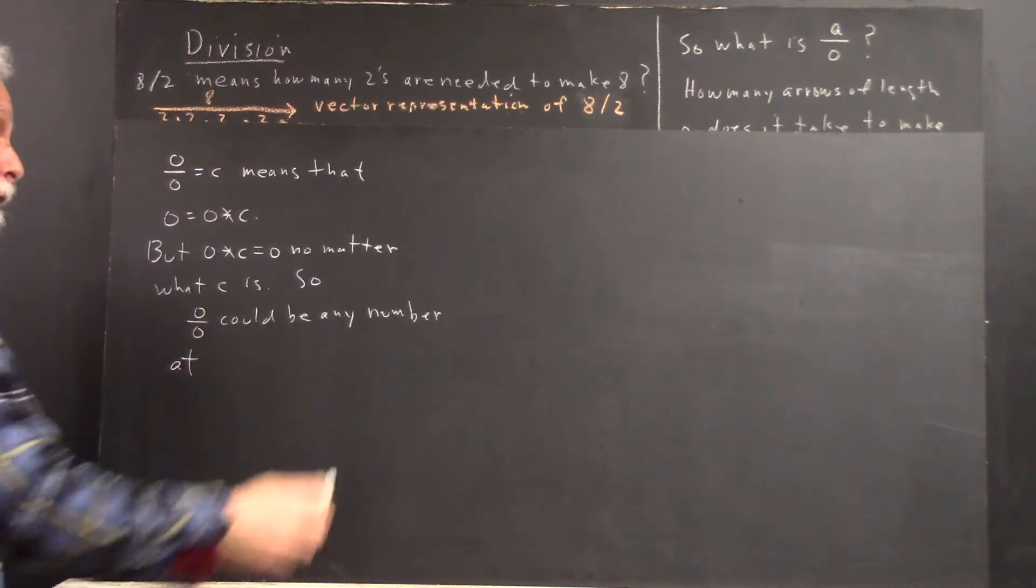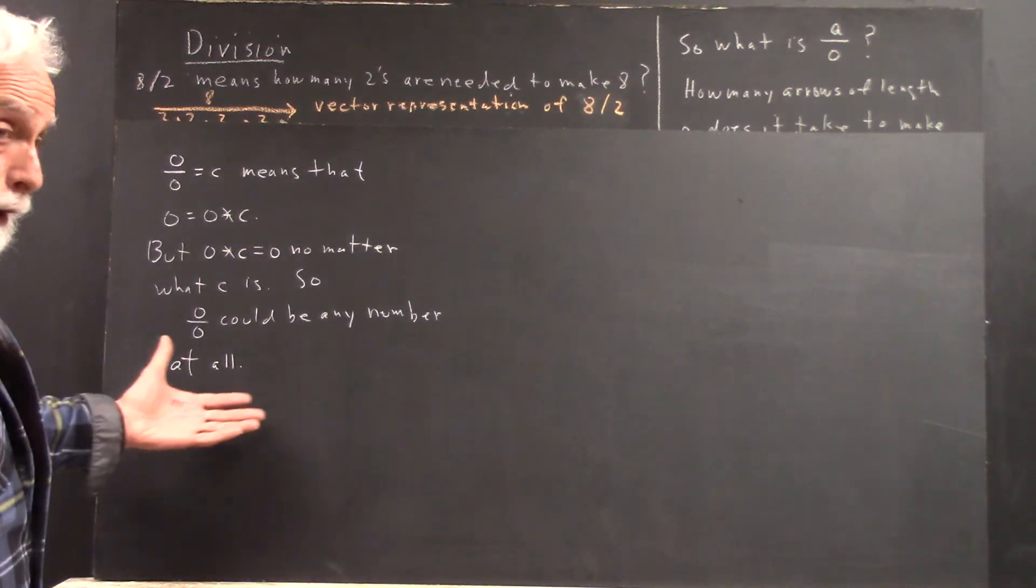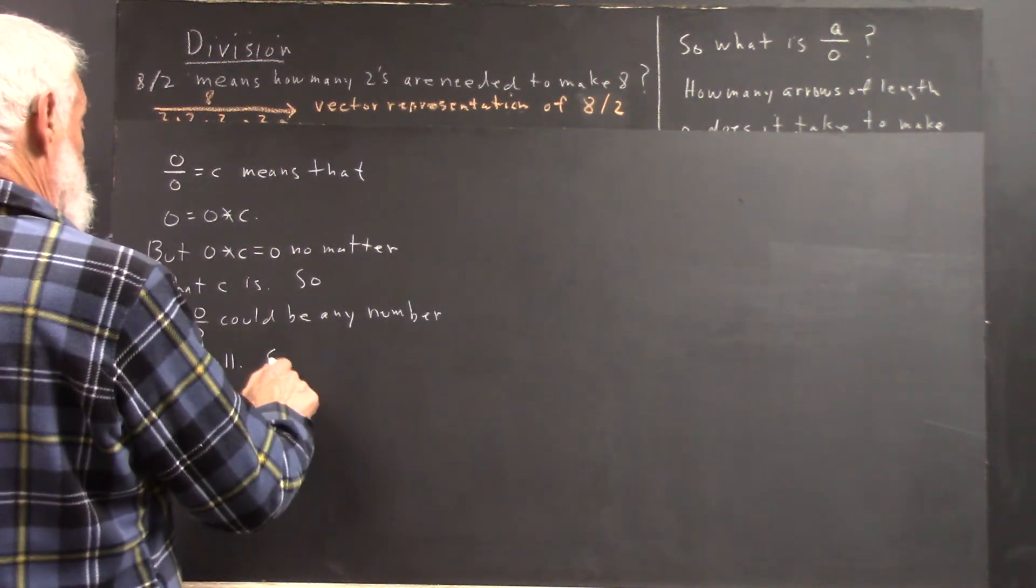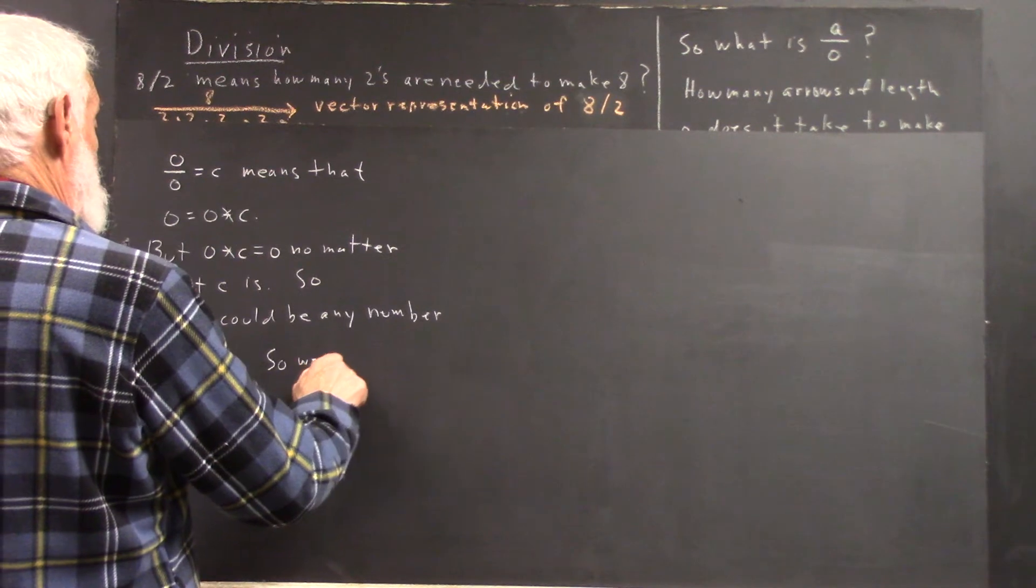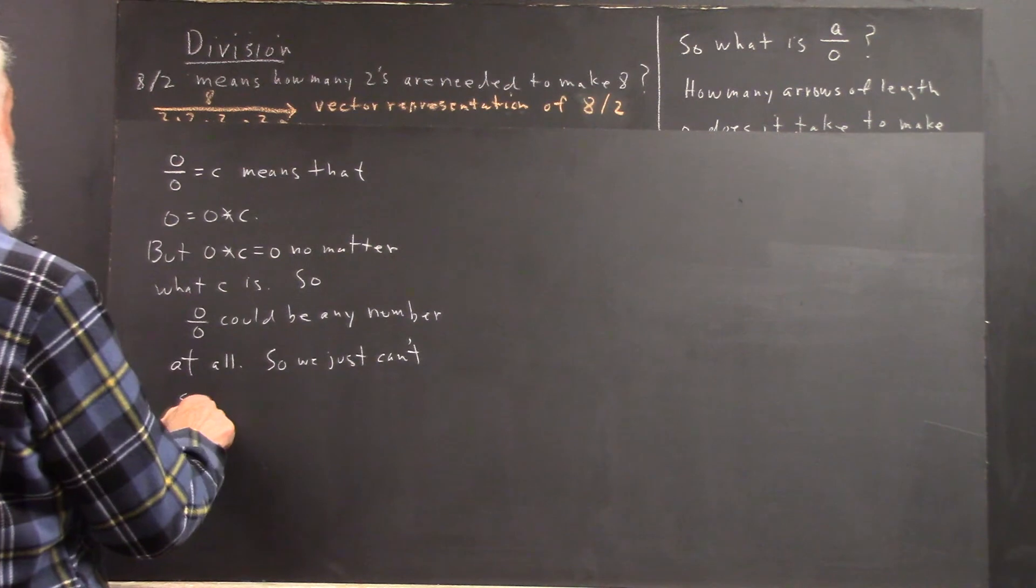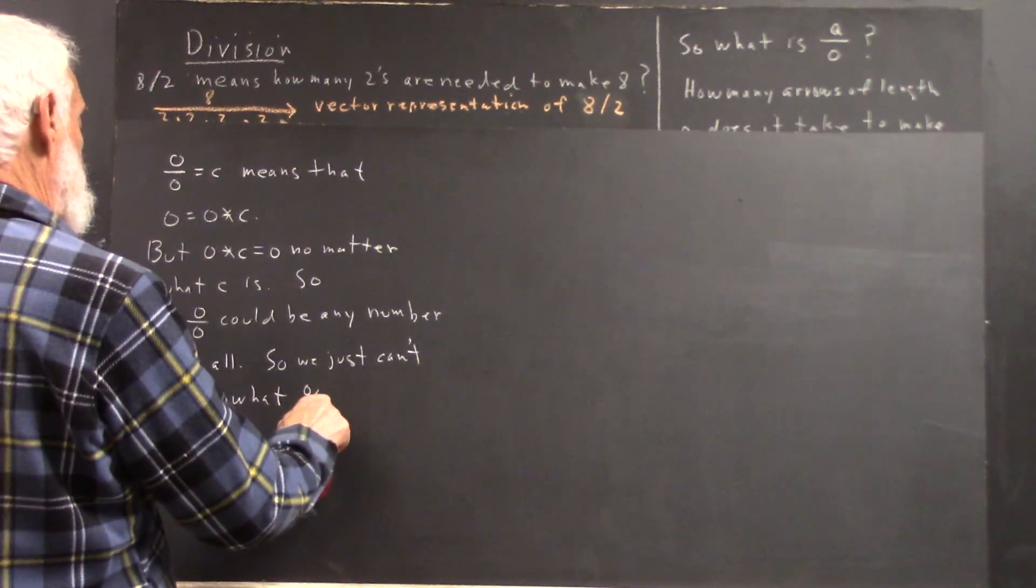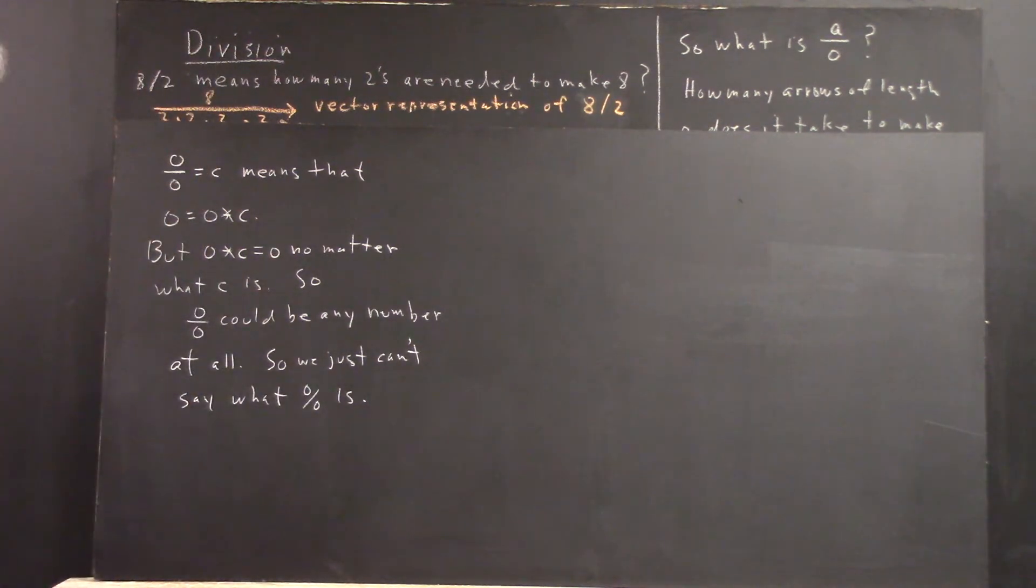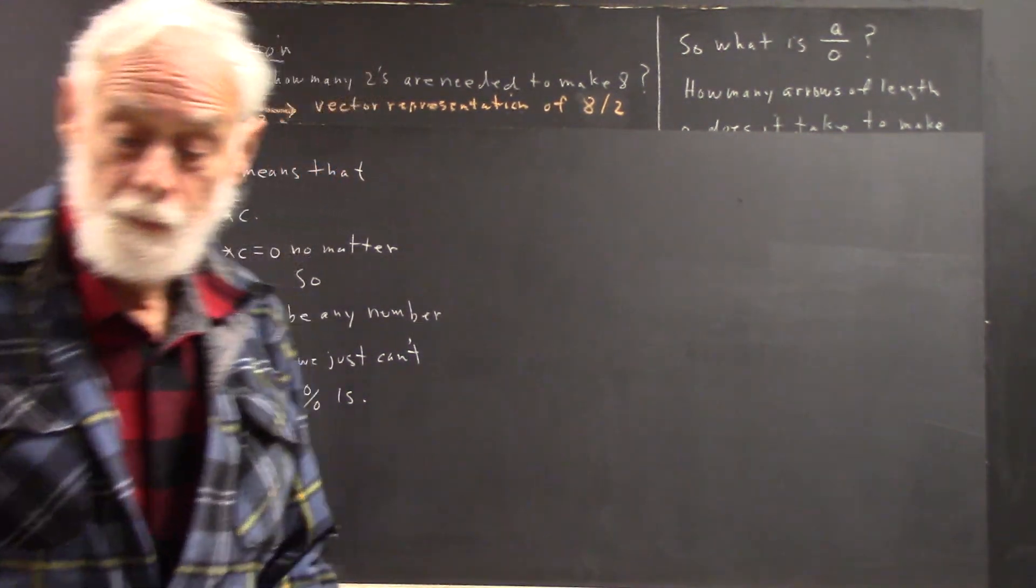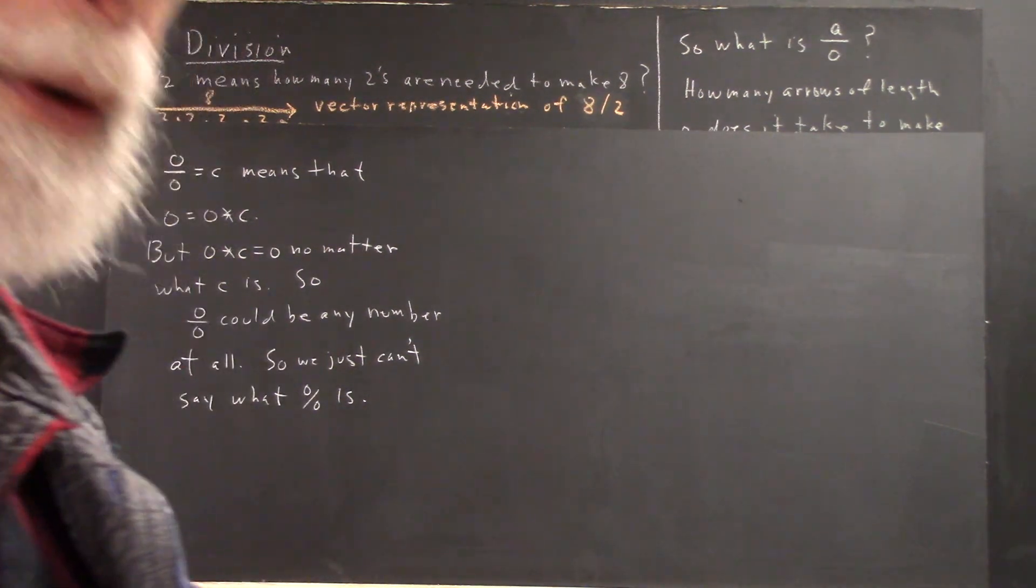0 over 0 could be any number at all. We just can't say what 0 over 0 is. We can't answer the question, what is 0 over 0? It doesn't exist. And it can't be defined in a way that's consistent with the rest of mathematics.